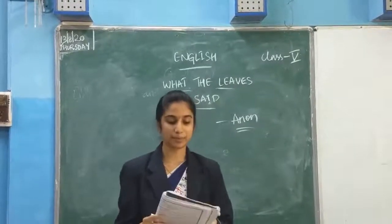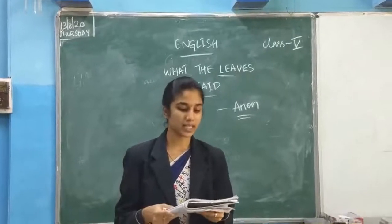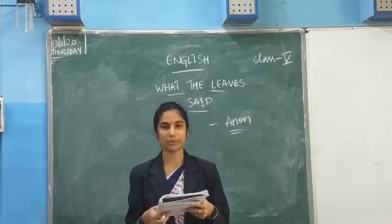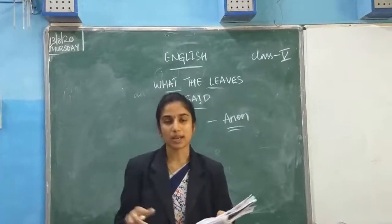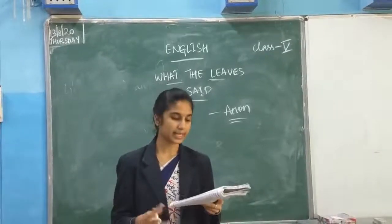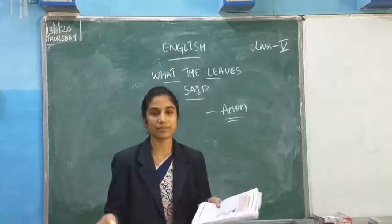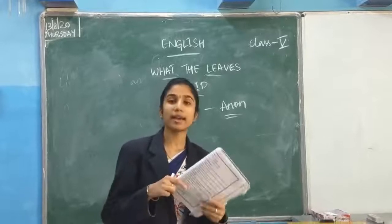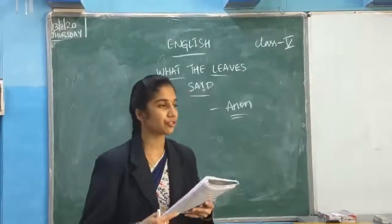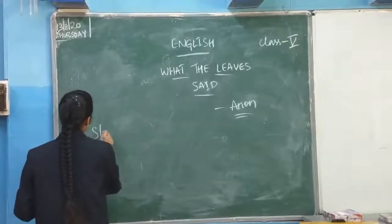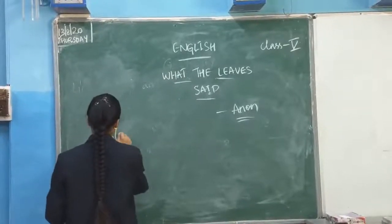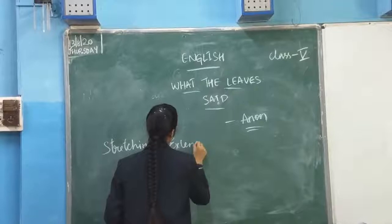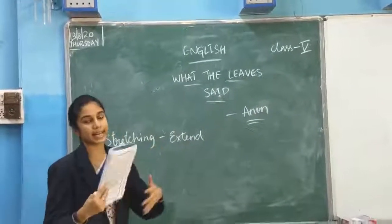Now we will start the poem. The Leaves Said it is spring, and here are we. It was a spring season, children, and the leaves are telling we are here. Opening and stretching on every tree. Stretching means extending, children.